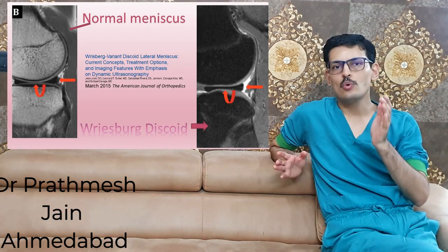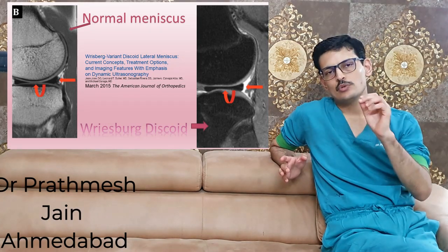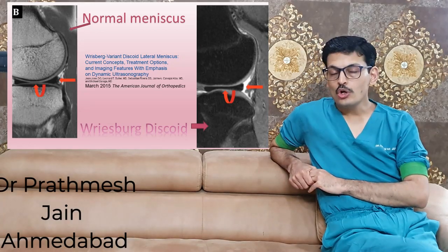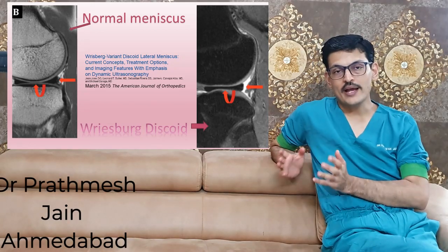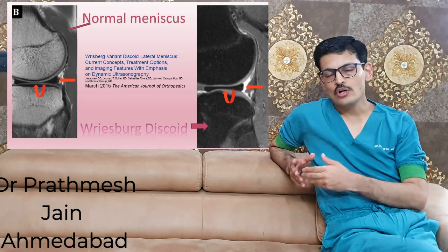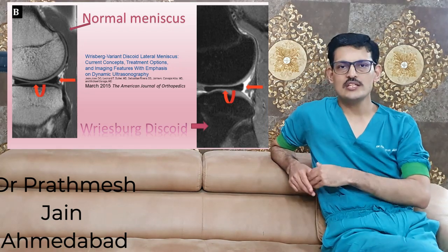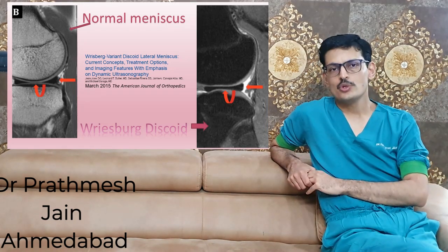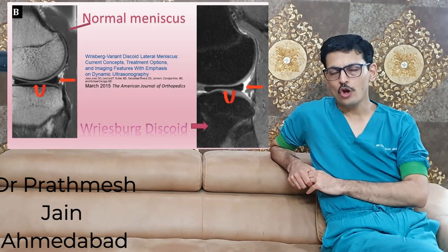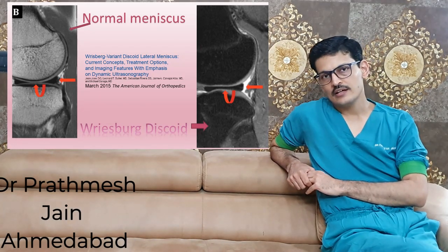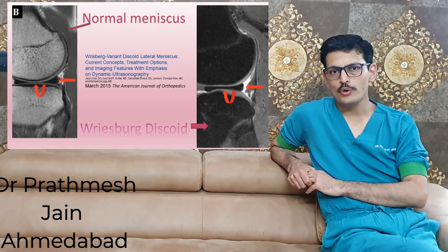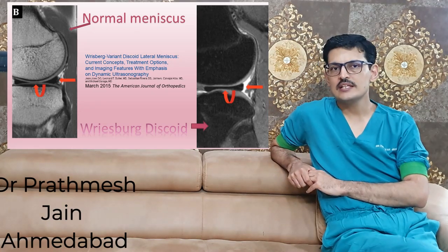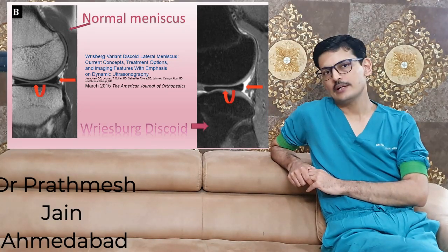The ligament of Wrisberg is the only structure attaching to the posterior part of the lateral meniscus, making it a very mobile structure. This may cause a snapping kind of noise whenever you flex and extend your knee. It is a rare condition, but you should know it for academic purposes, and occasionally you may see these kinds of patients in your clinical practice.